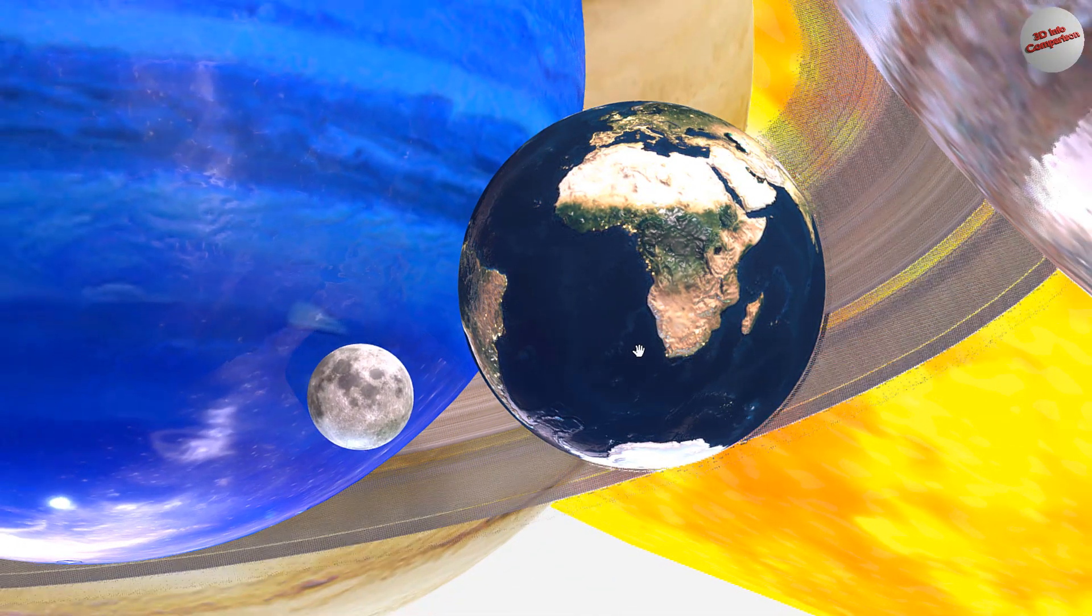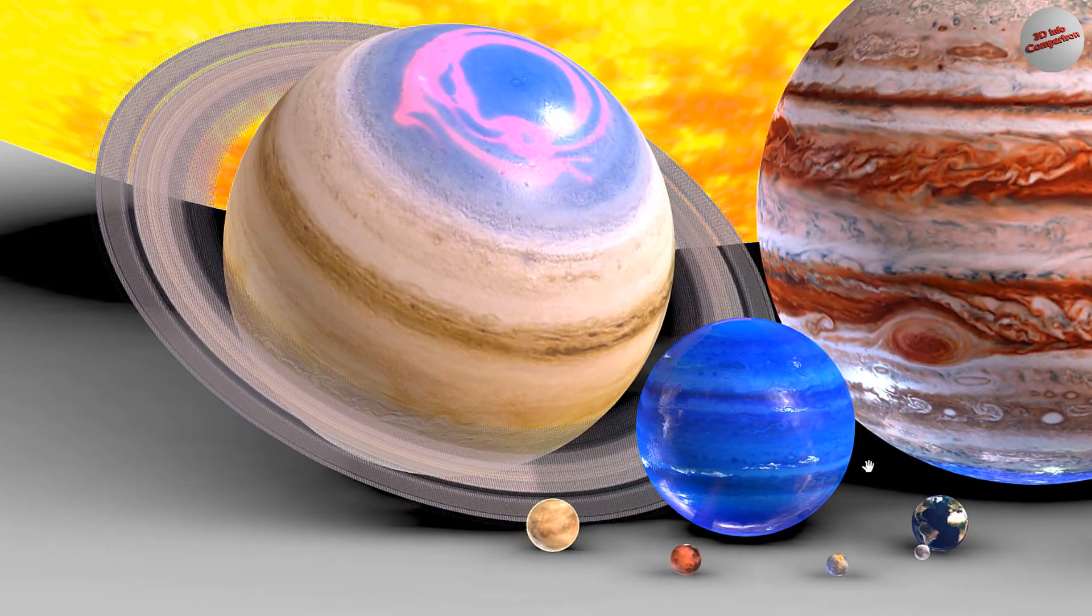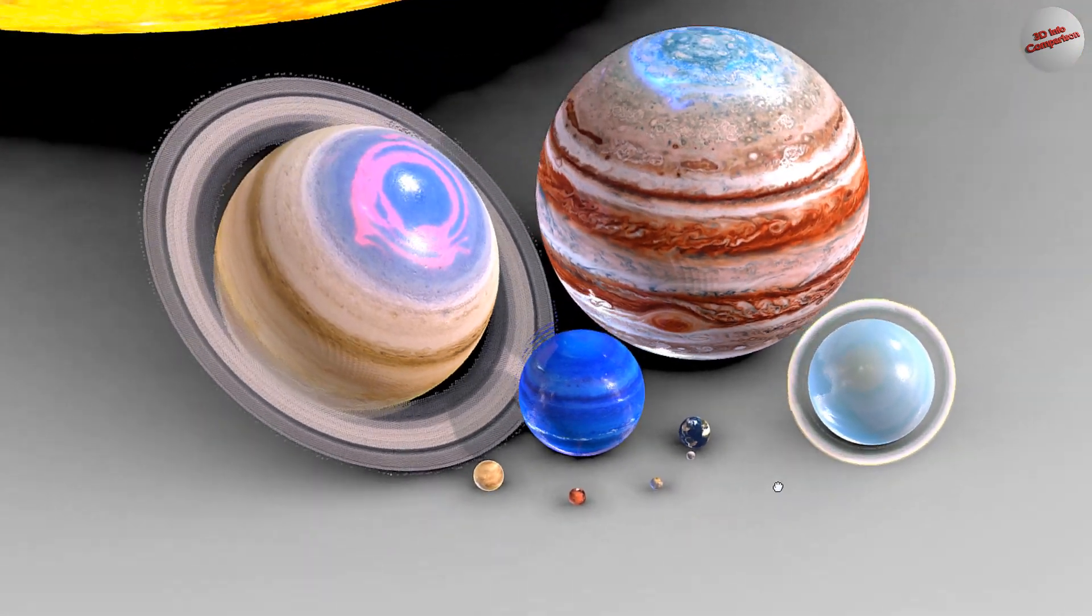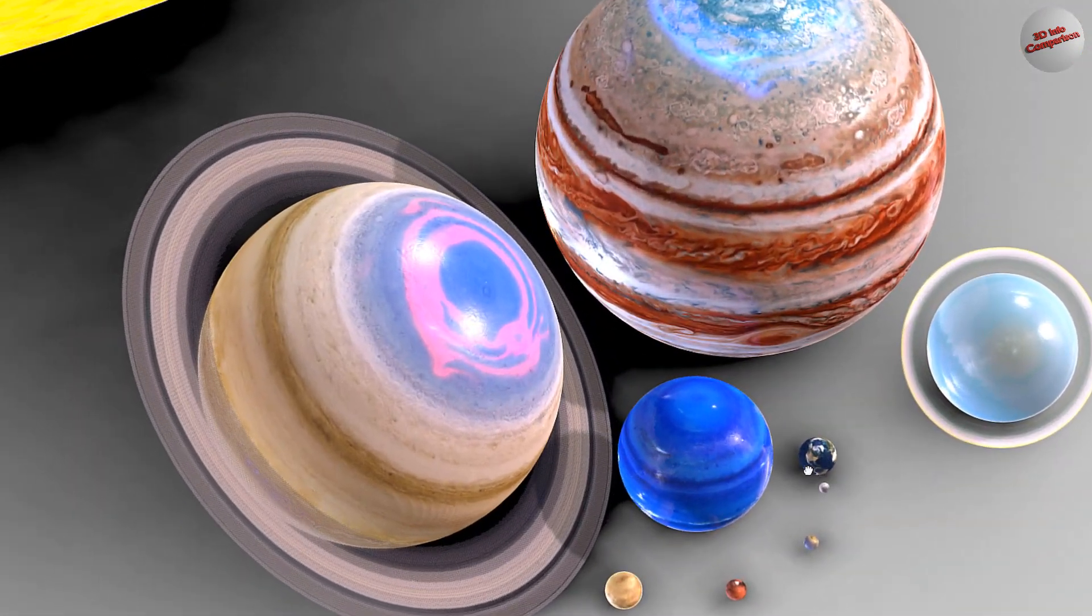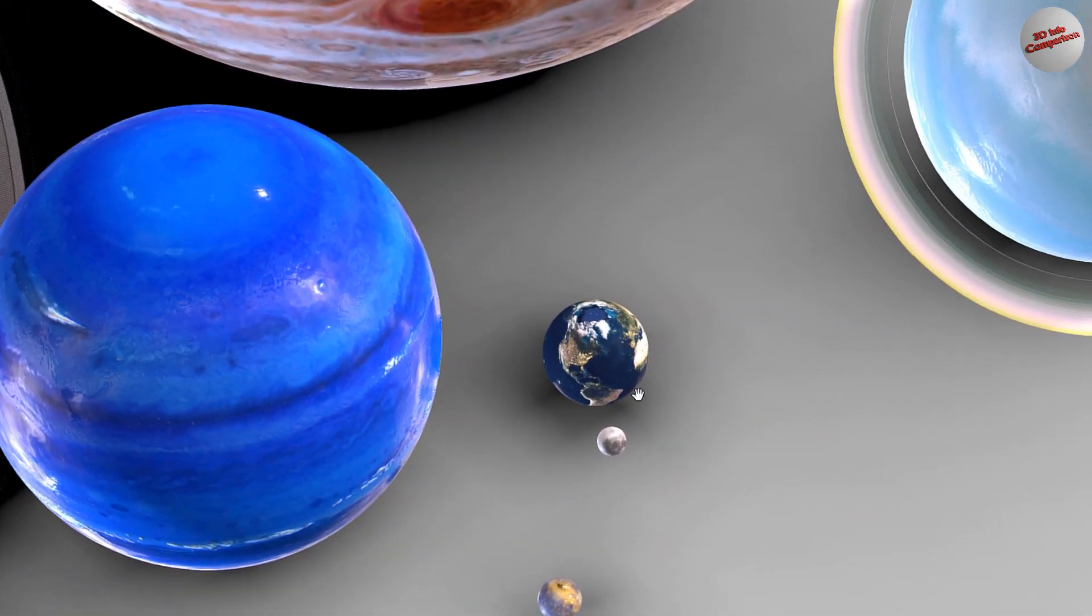Earth is unique in its ability to support a wide range of life, from microscopic organisms to complex multicellular organisms like humans. It has a diverse range of environments, from deserts to rainforests, and is home to millions of species.